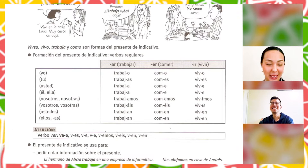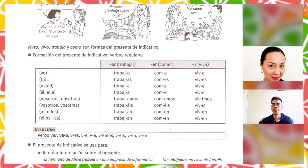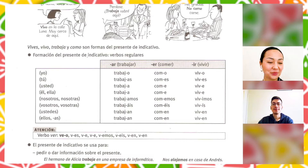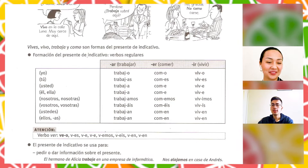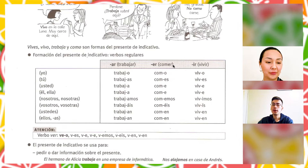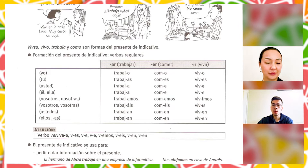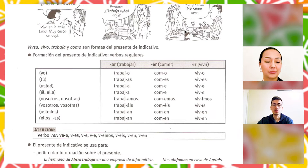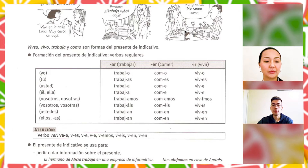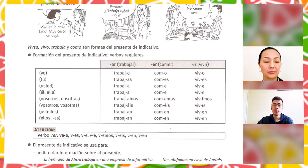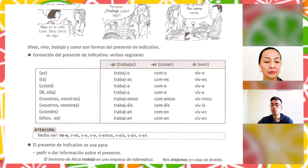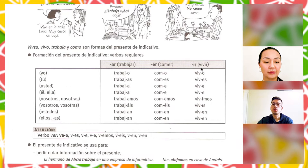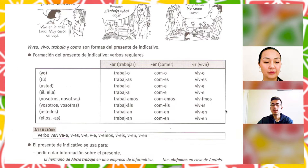Let's see the form for -ER verbs. For yo it's going to be como. Tú comes. Usted, él, ella come. Nosotros, nosotras comemos. Vosotros, vosotras coméis. Ustedes, ellos, ellas comen — so the vowel here is E. And for the -IR verb: yo vivo. Tú vives. Usted, él, ella vive. Nosotros vivimos. Vosotros, vosotras vivís. Ustedes, ellos, ellas viven — and yo keeps the O ending here too.